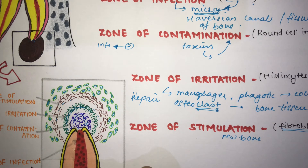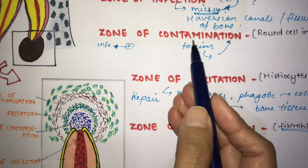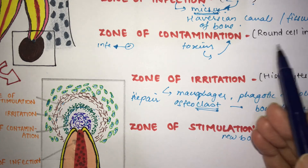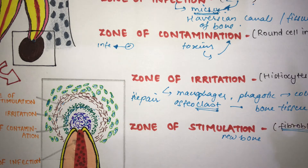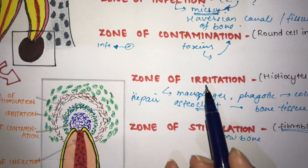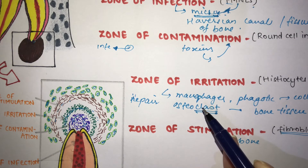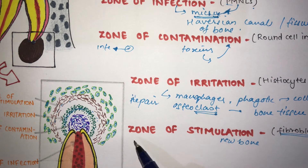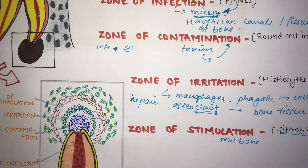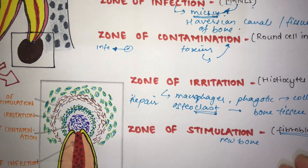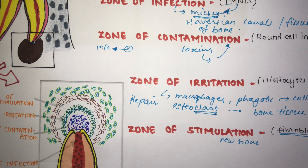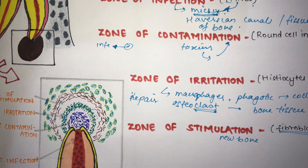To summarize: the Zone of Infection contains leukocytes; the Zone of Contamination contains round cell infiltrate and lymphocytes; the Zone of Irritation contains osteoclasts, phagocytes, and macrophages; and the Zone of Stimulation contains fibroblasts and osteoblasts.